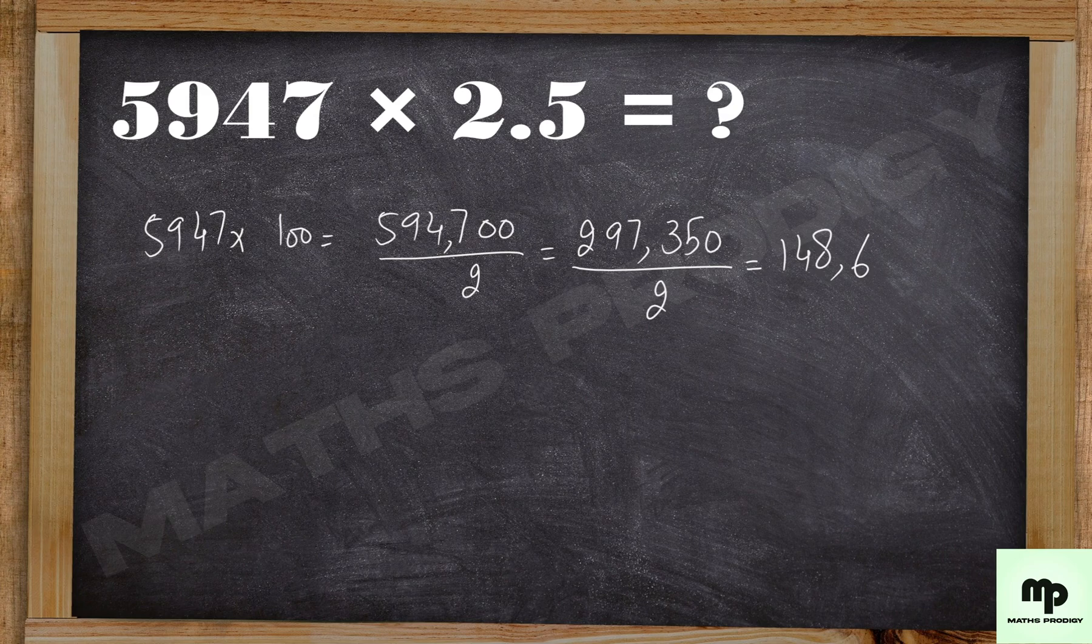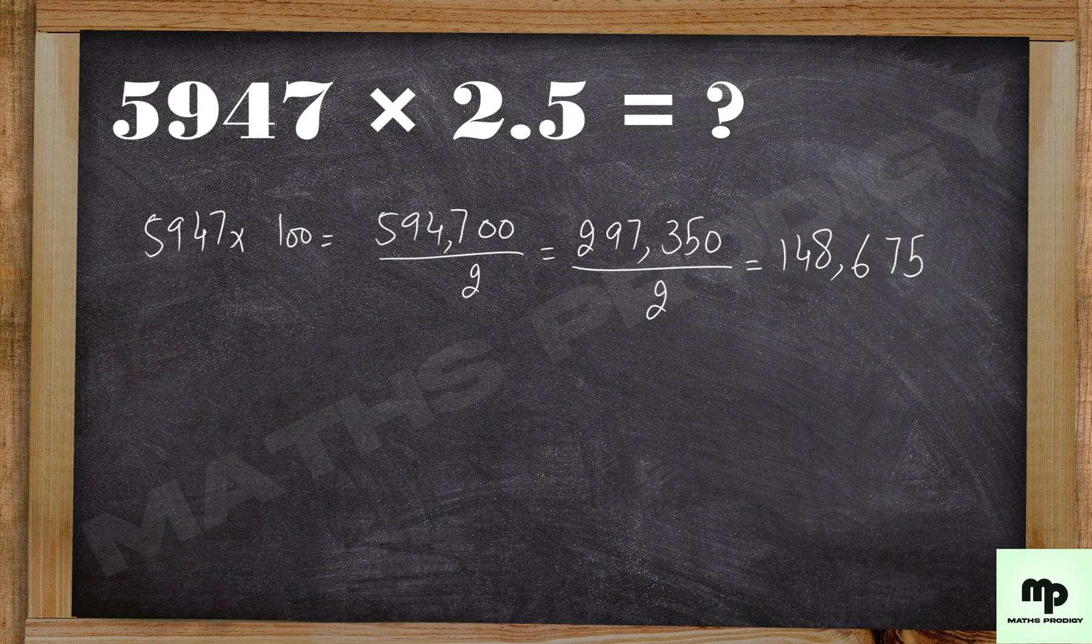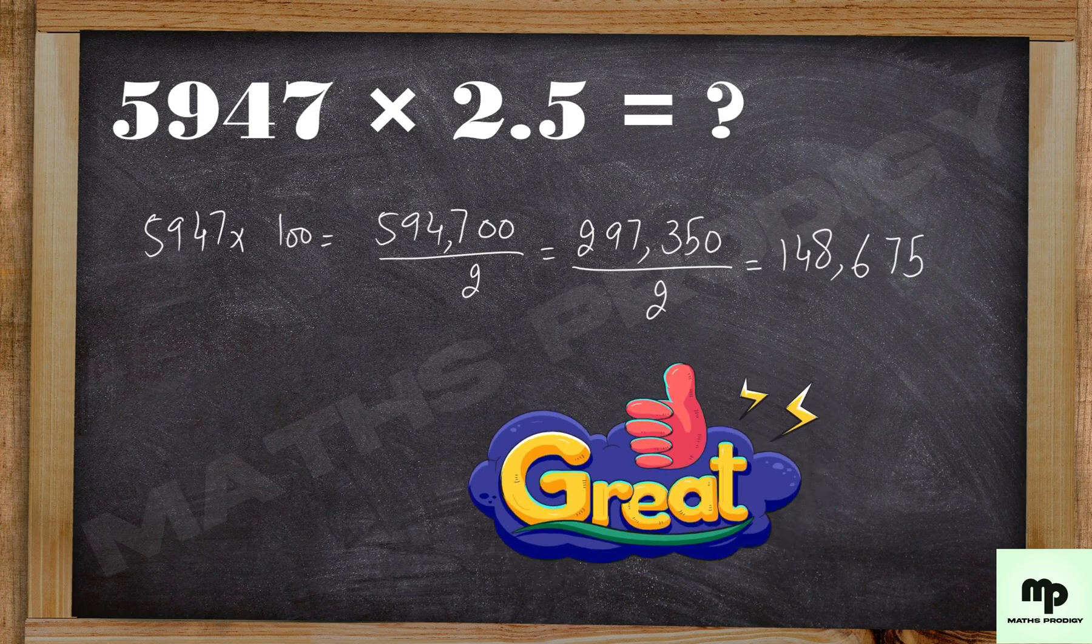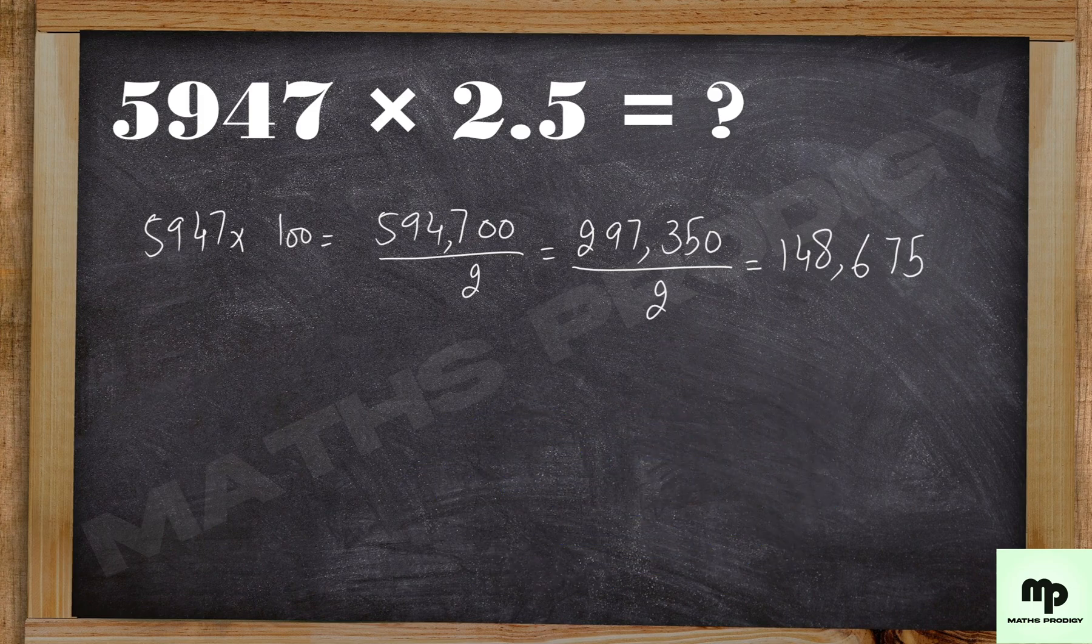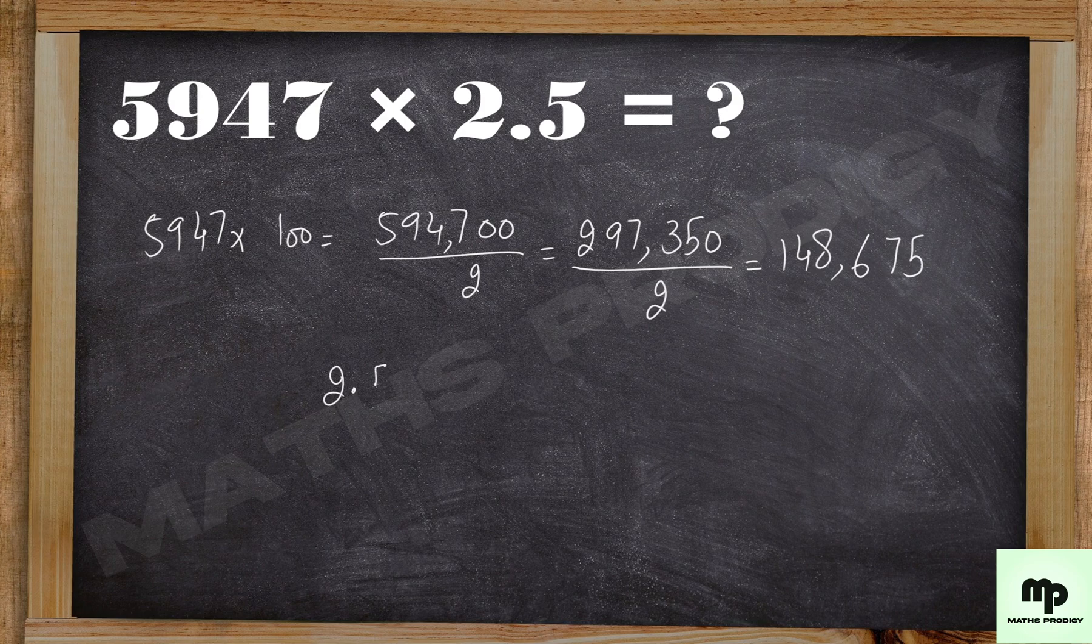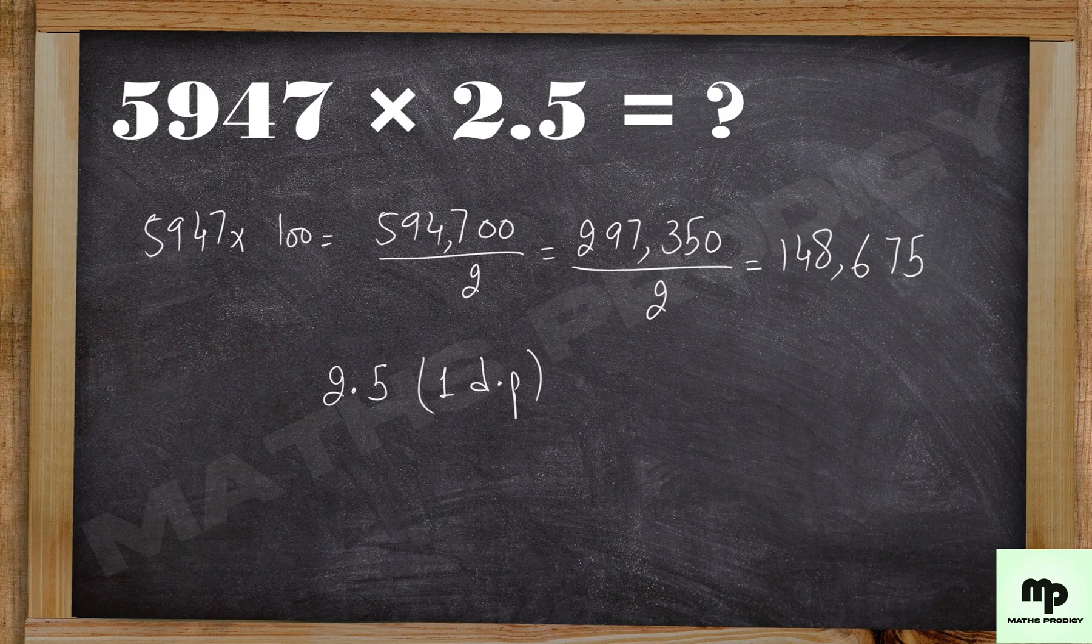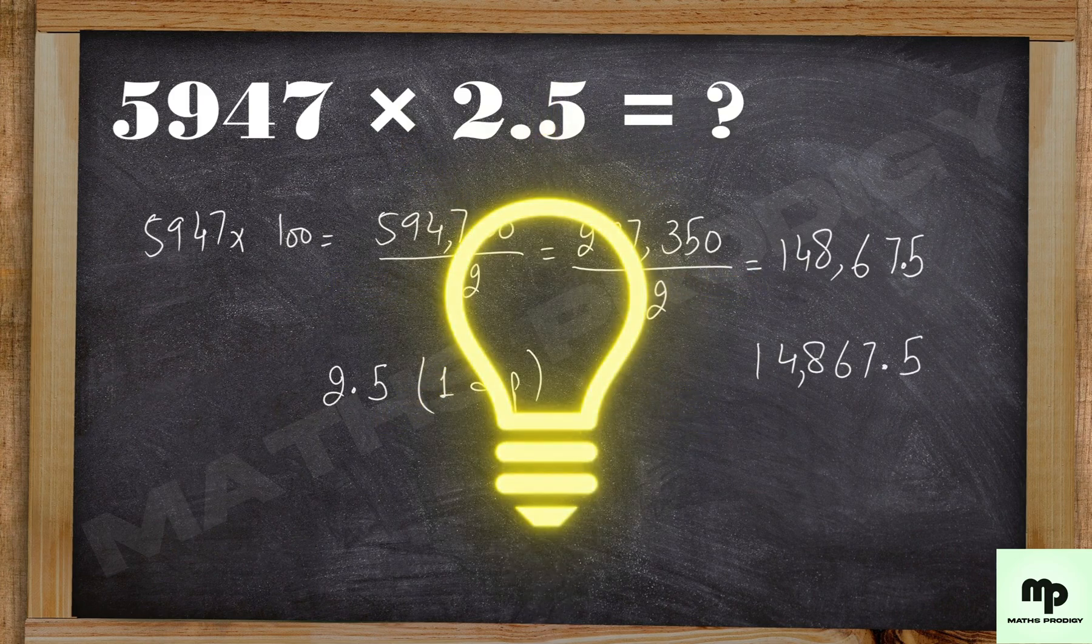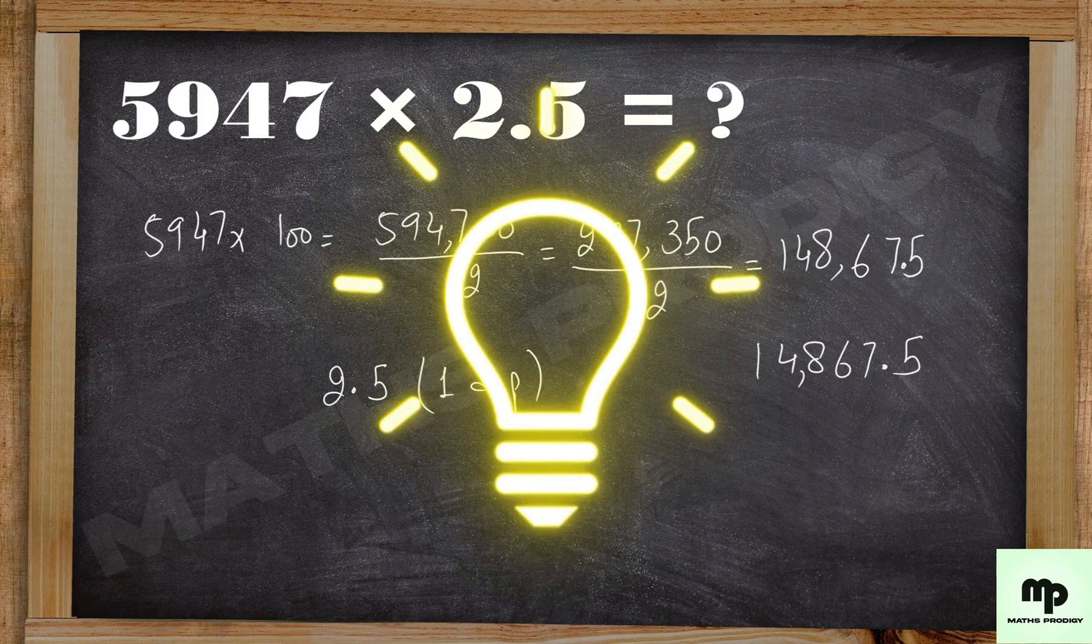The remaining 150, the half is 75, so 675. And as you know that we are multiplying with 2.5, there is a decimal in 2.5. It has one decimal place, so simply what you do, you put a point in the end here. It must have two decimals, so the final answer is 14867.5.